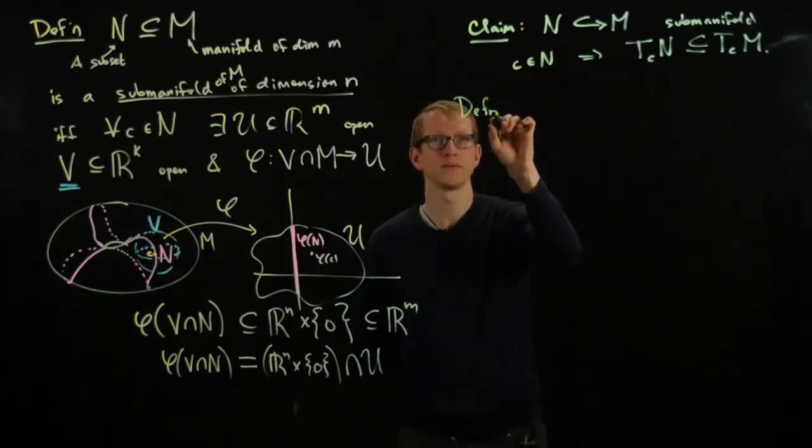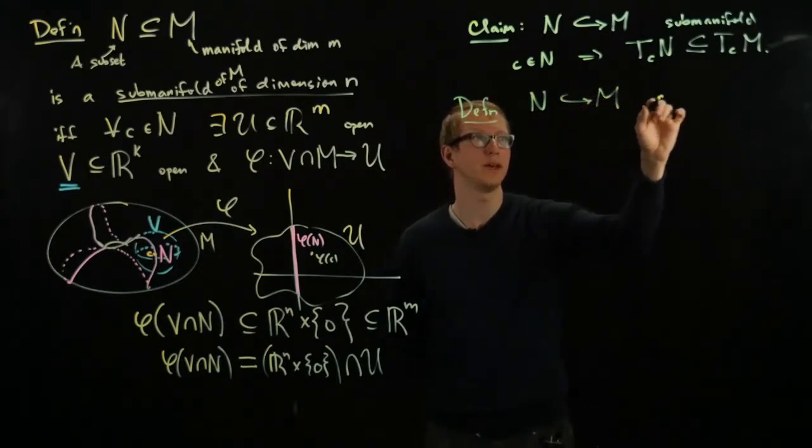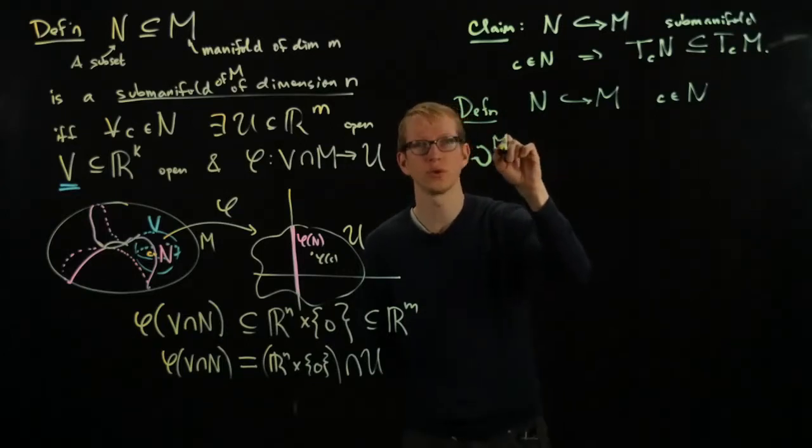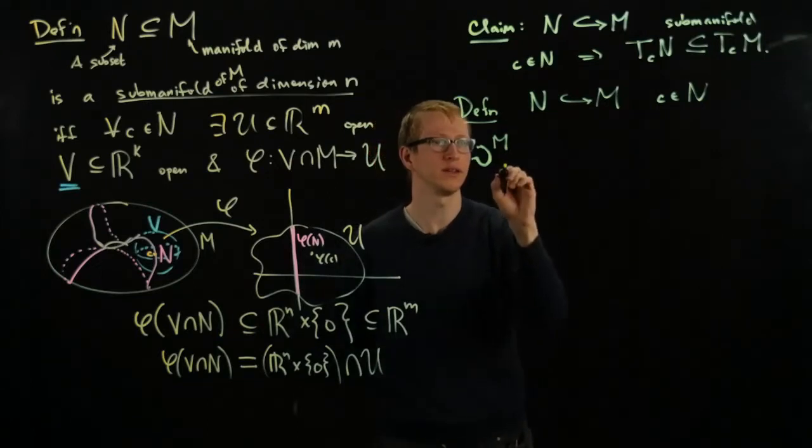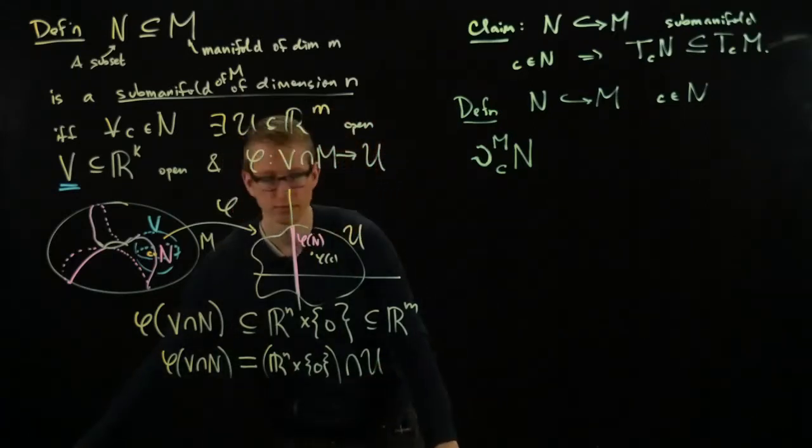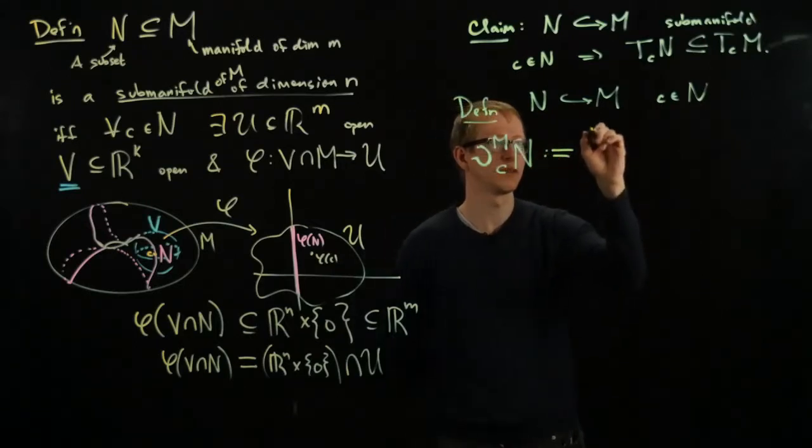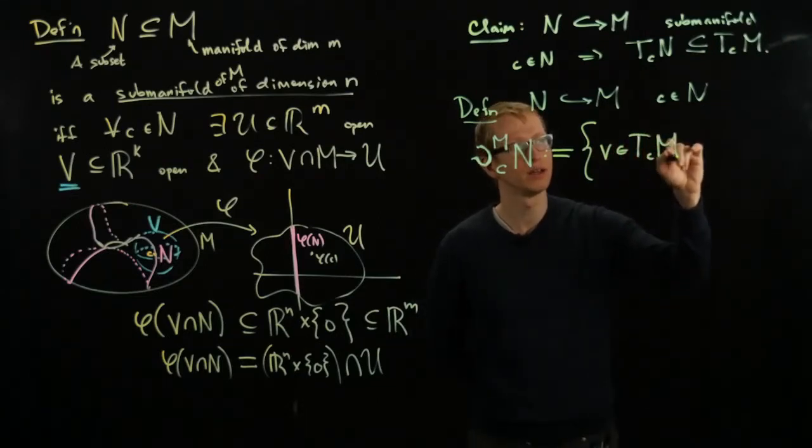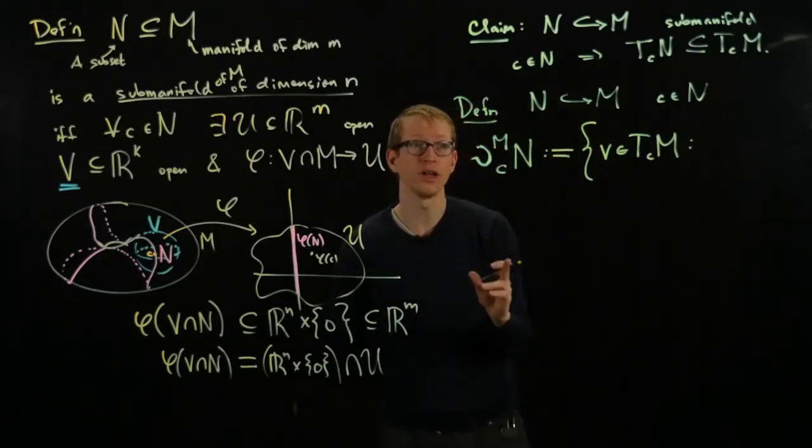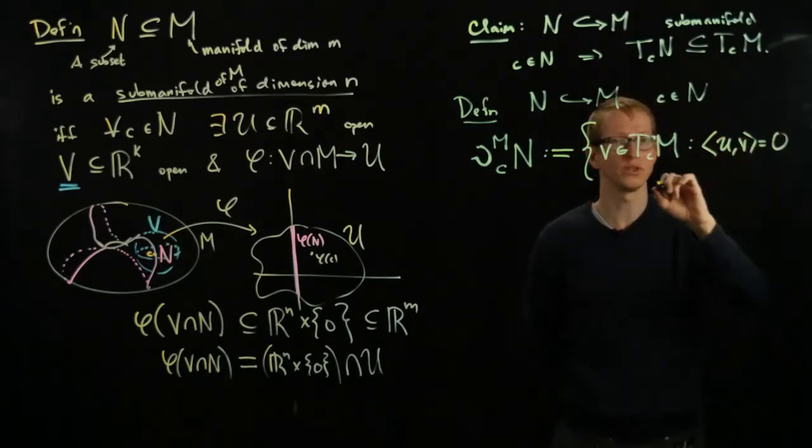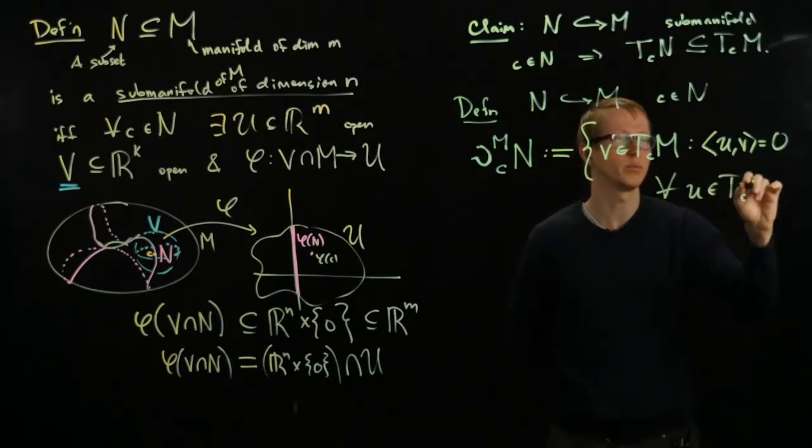So then, using this, we can define if N is a sub-manifold of M and C is a point in N, we can define the set of normal vectors, which we denote with the Greek letter nu, subscript M to remind ourselves where our manifold N is embedded in, at the point C of the manifold N is defined to be the set of tangent vectors in M satisfying the condition that they are perpendicular to every vector in the tangent space of M, of N, rather, equals 0 for all U in the tangent space of N.